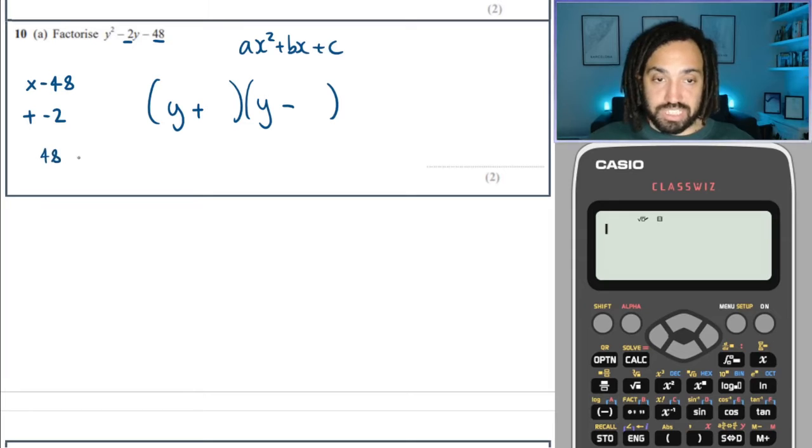The two numbers are going to be, well, if you're not sure, you could always do factor pairs. So one and 48, they're not going to make minus two. 24 and two, that's not going to make minus two. 12 and four, that's not going to make minus two.